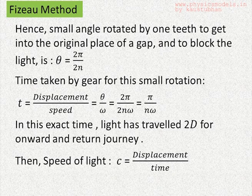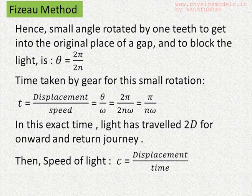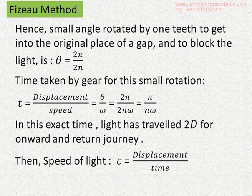Meanwhile, the light beam has travelled d in the onward direction towards the mirror and again back d till the gear teeth. So that's a 2d distance from the gear teeth to the mirror and back from the mirror to the gear teeth.